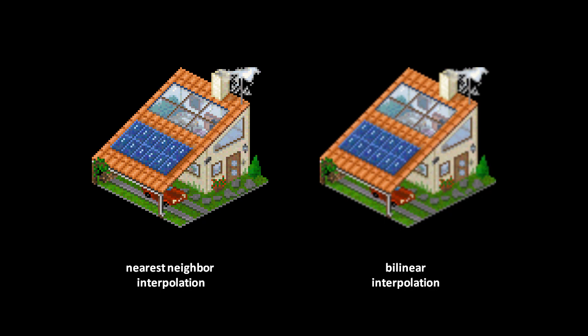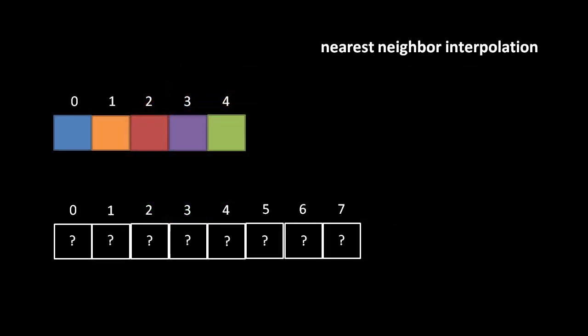To understand why this happens, let's look at how these two interpolation techniques work. First off, consider the simple case of scaling a one-dimensional image using nearest-neighbor interpolation. We have a row of 5 pixels, which we want to resize to a row of 8 pixels. We can think of pixels as little squares. The essence of what we want to do is translate from one coordinate system to another. The 5-pixel image is a coordinate system that runs from 0.0 at the left edge of its leftmost pixel to 5.0 at the right edge of its rightmost pixel. Likewise, the 8-pixel image is a coordinate system that runs from 0.0 on the left edge to 8.0 on the right edge. The question is how the coordinates in our 5-pixel source image line up with coordinates in our 8-pixel destination image.